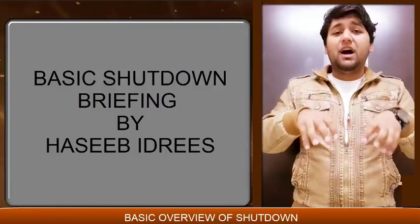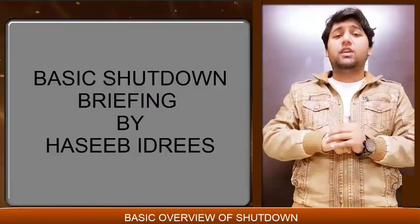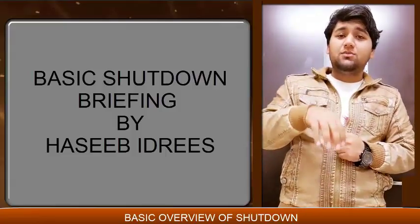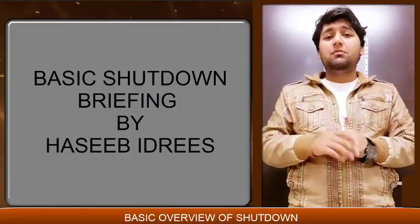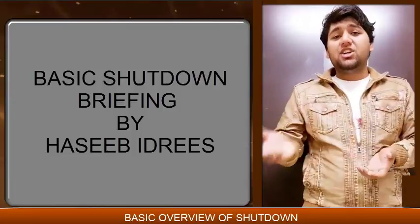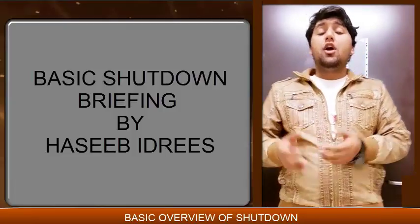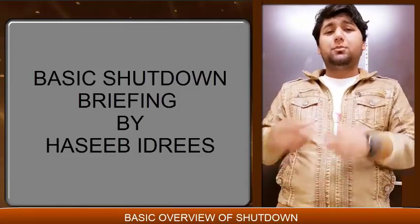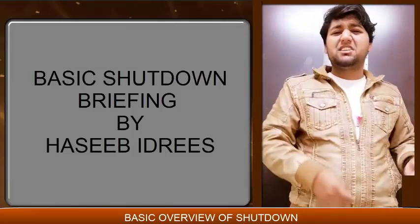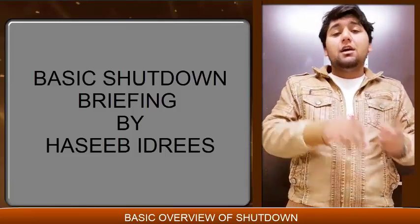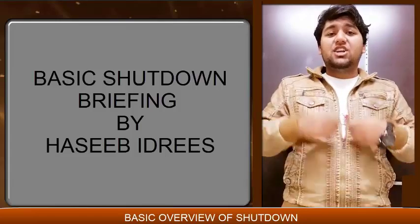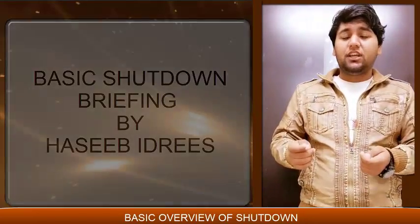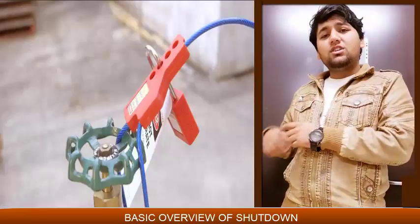There are three parts into which shutdown activity is divided: number one, pre-shutdown; number two, shutdown time activity; and number three, post-shutdown. In pre-shutdown, it is the preparation — they will apply for the permit, the procedures, risk assessment, each and everything will be done. Then the shutdown activities will start after the erection of scaffolding, along with applying the LOTO system.